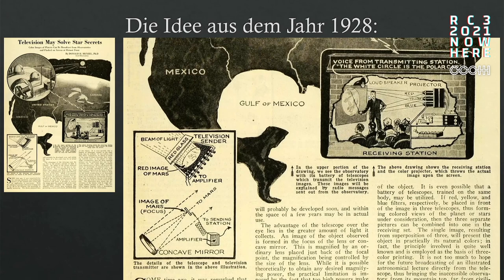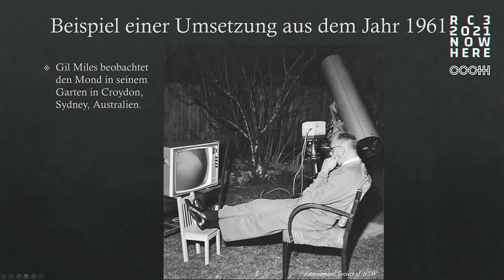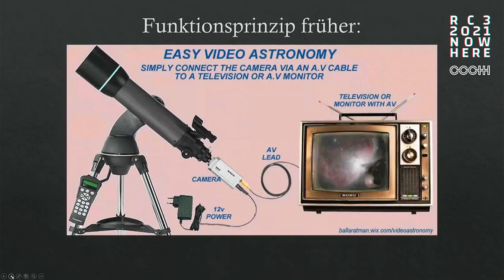That was actually with a speaker. So that was the idea in 1928 — they didn't have the technology. In 1961, there was G.M. Miles, one of the big entrepreneurs in that area. You can see him in his garden in Sydney, with the telescope in the back and a camera, and an old TV where he can see the image.